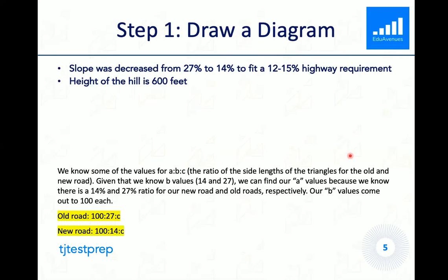So the first step is to draw a diagram that can help us solve this problem. From the prompt, we know that the slope of the new road decreased from 27% to 14% to fit a highway requirement. And we also know that the height of the hill is 600 feet. So using this information, we can draw two right triangles like this. One that represents the old road and one that represents the new road. The triangle of the old road is drawn in red, while the triangle of the new road is drawn in blue.